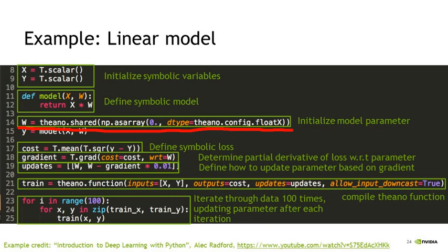How does one use Theano's scan function for recurrent neural networks? That's not really a one-line answer. Scan is basically an efficient way of doing loops in Theano. It's not specifically closely tied to recurrent neural networks — I recommend understanding scan more generally. But we would need to discuss a lot of recurrent neural network theory to really explain that in detail.